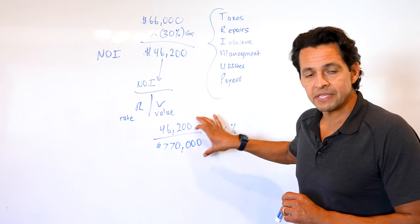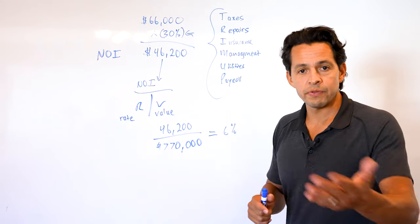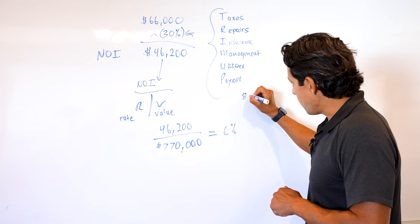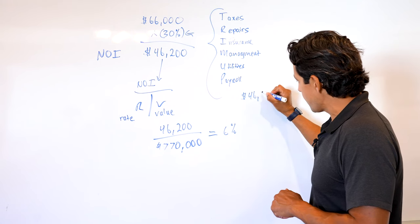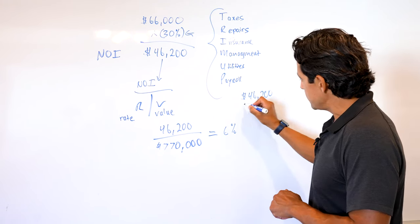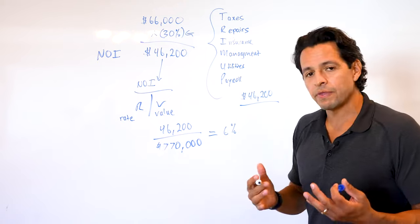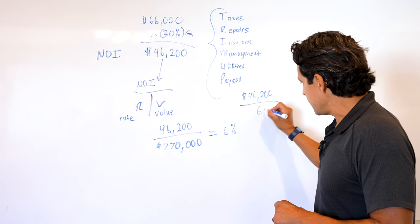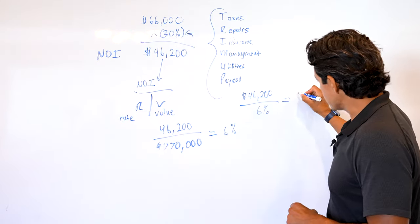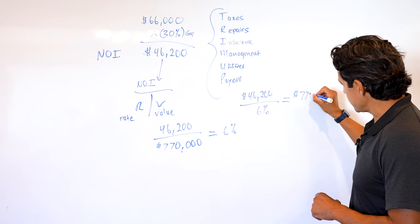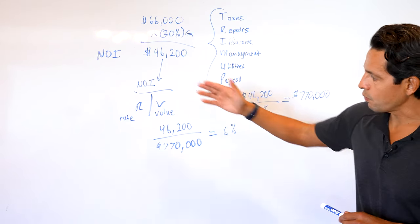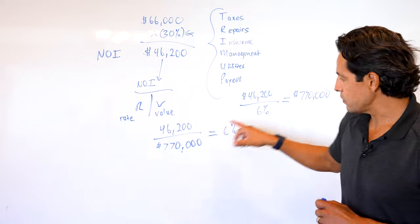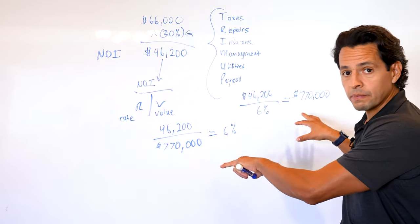I'm going to redo this example, but this time we don't know the value, but we know the cap rate. I'm going to take the same NOI because the NOI hasn't changed for the property. That's going to be the same. This time I don't know the value, but I know that I want a 6% cap. We make this division and guess what? We come up with $770,000. No matter whether I know the cap rate or I know the value, I could come up with the same number, which is important.